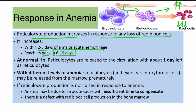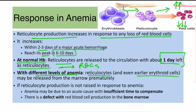When hemoglobin is normal, reticulocytes are released into circulation with about one day remaining as reticulocytes, after which they turn into red blood cells. However, with anemia, reticulocytes or even earlier erythroid precursor cells can be released into circulation prematurely. If reticulocytes are not raised in response to anemia, this suggests either insufficient time for bone marrow response or a defect in red cell production in the bone marrow.